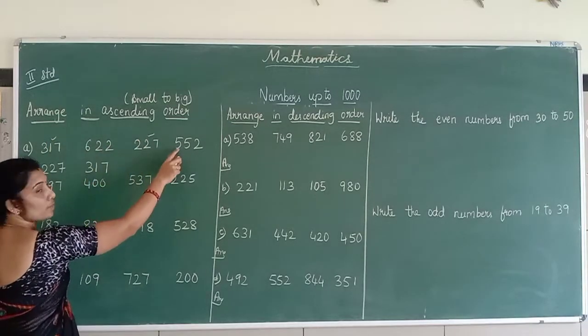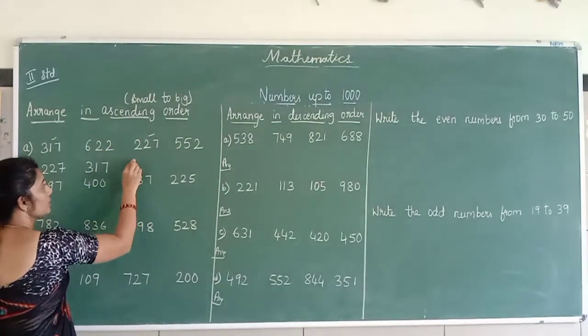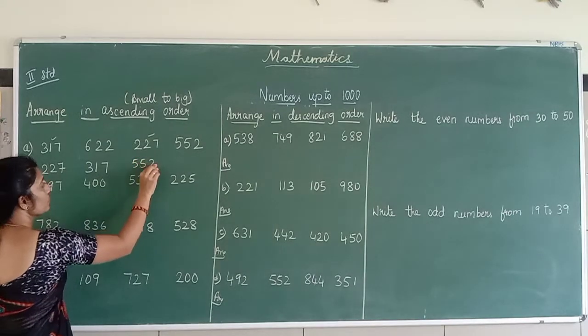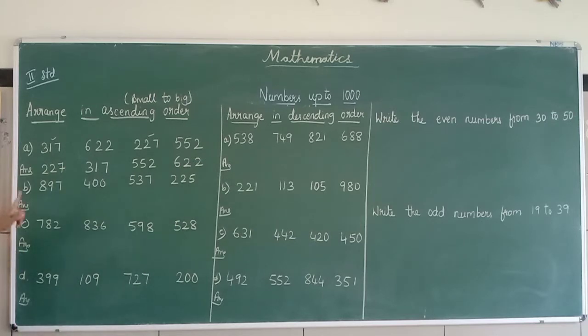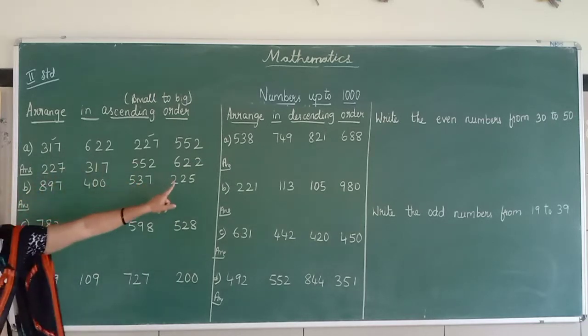Now, 6 is smaller or 5 is smaller? 5 is smaller, so it is 552. And last, I am now 622. So this, you are already from smallest to the biggest number.